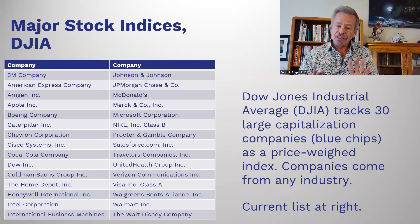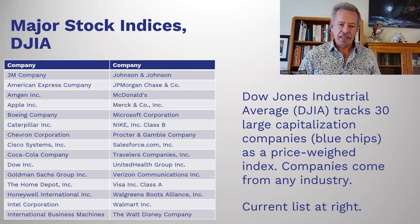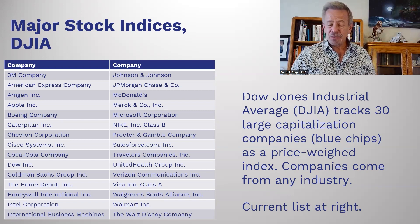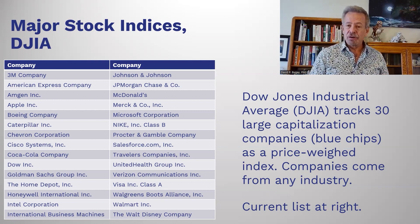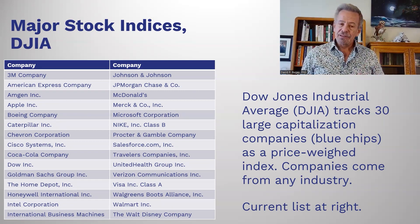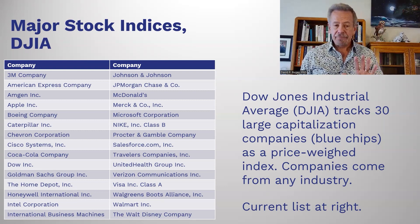The Dow Jones Industrial Average tracks the 30 largest capitalized companies out there. The current list is here on the left — 3M Company, Johnson & Johnson, you'll see them all. It's kind of funny because we call it the 'industrial average' but some of these aren't even industrial — Nike, for instance. The one that owns the listing is actually the Wall Street Journal, owned by the Dow Jones Company, so they decide who gets to play. It's all really based upon capitalization and how financially big the company is.